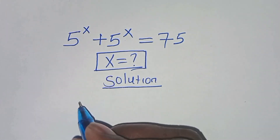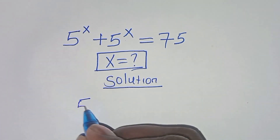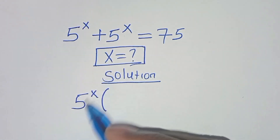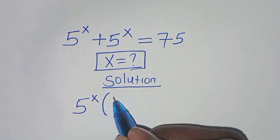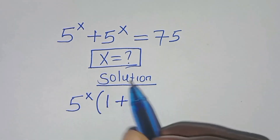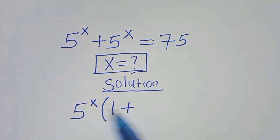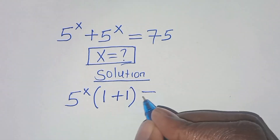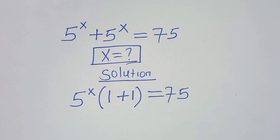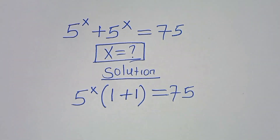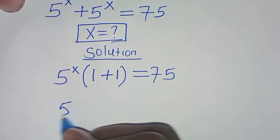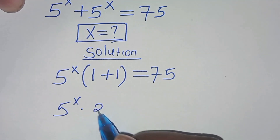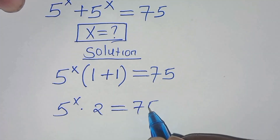5 to the power x is common here, so we can factor out 5 to the power x. That gives us 5^x times (5^x divided by 5^x plus 5^x divided by 5^x), which simplifies to 5^x times (1 + 1) equals 75.